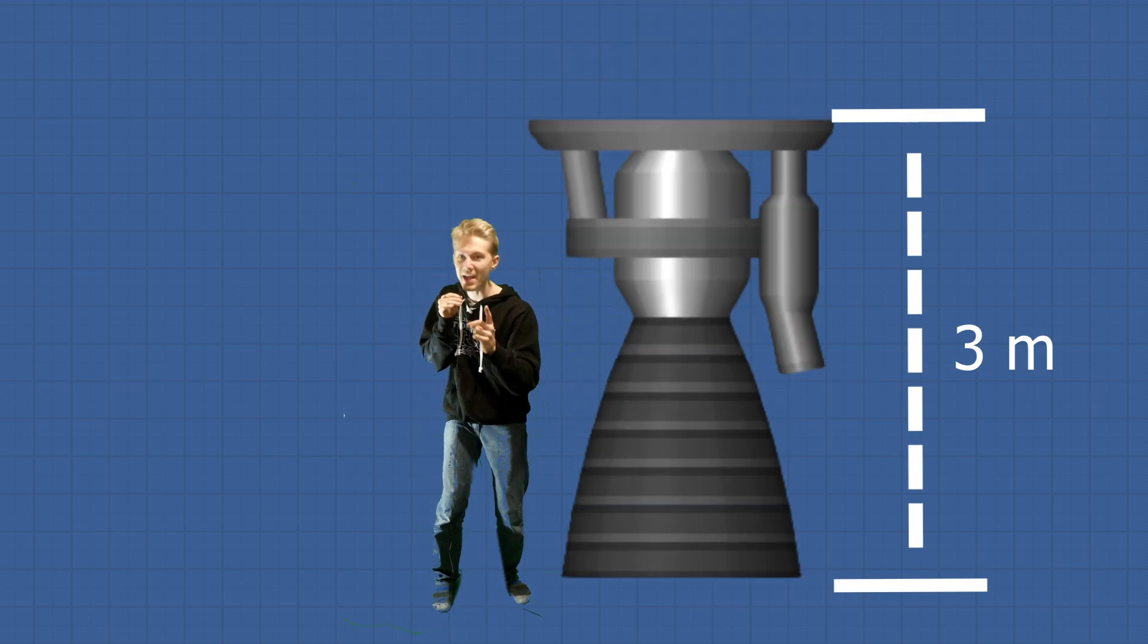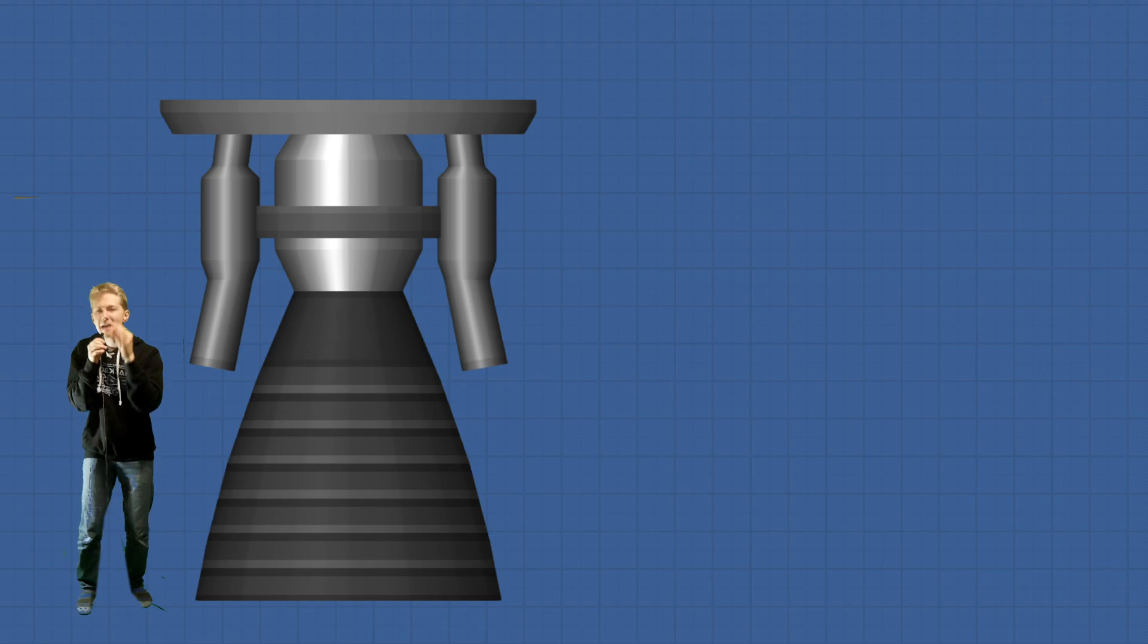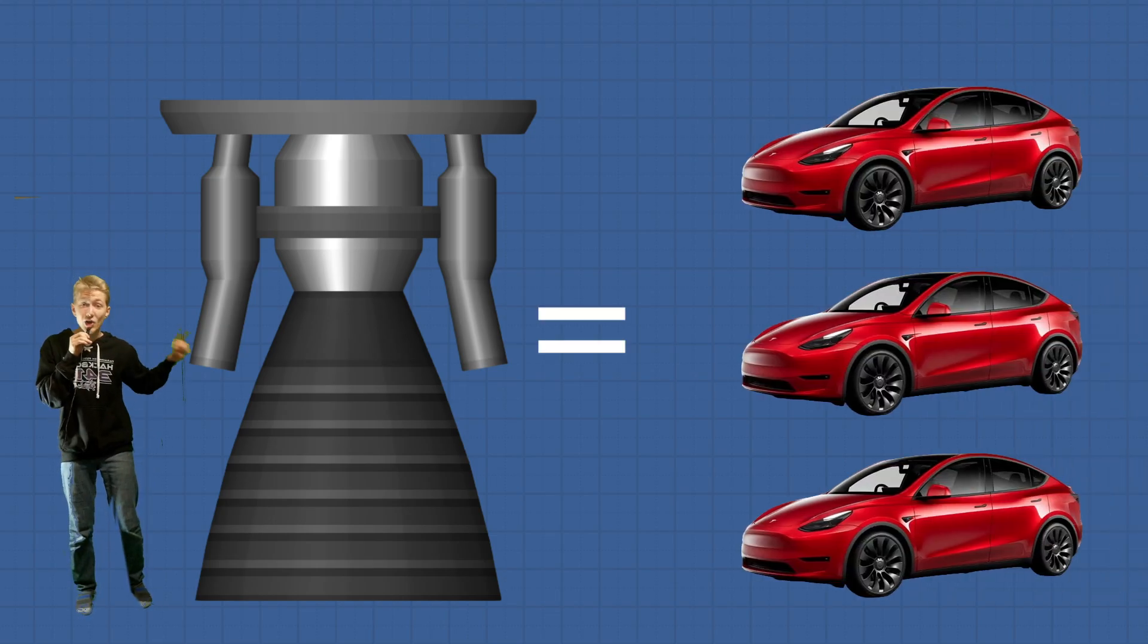From here, things are going to start escalating very quickly. For example, already towering over me at three meters tall, we have the Hawk engine. Let's take a look at two more parts before we go out onto the launch pad. The biggest engine in game is currently the Titan engine. At four meters tall, it is literally the mass equivalent of three mid-sized cars.